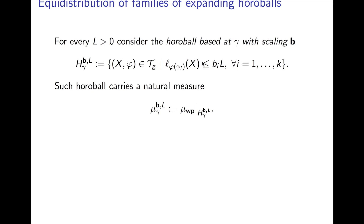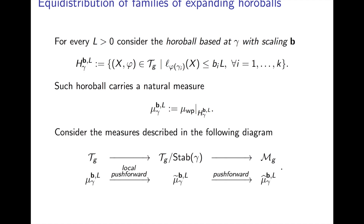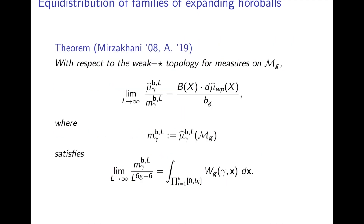Just as before, that horoball carries a natural measure — restricting the Weil-Petersson measure to this horoball. And just as before, to explore how these horoballs equidistribute when pushed down to moduli space, we need to quotient out the redundancies. In this case the redundancies are the stabilizer of the multi-curve gamma (stabilizing every component), just as before the redundancies were the stabilizer at infinity. So we build measures according to the following diagram: first we have our horoball measure on Teichmüller space, we take a local push-forward to the quotient of Teichmüller space mod the stabilizer of the curve, and then push everything down to moduli space, getting rid of redundancies and arriving at an actual finite measure.